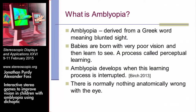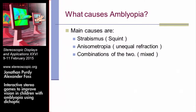Amblyopia develops when there's an interruption in that process. Normally, the thing to note is there's nothing anatomically wrong with the eyes — it's to do with the process of learning being interrupted. There are a few causes. One is a squint, so an eye is pointing in the wrong direction. The main one is unequal refraction: if one of the eyes has a different refractive index to the other, both eyes cannot see the same object in full focus. The brain's coping mechanism is to disregard information from the blurred eye, hence you get a weaker eye, termed a lazy eye.